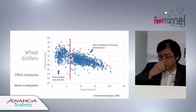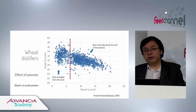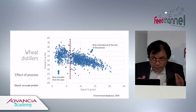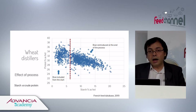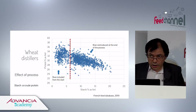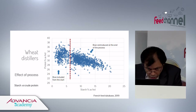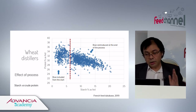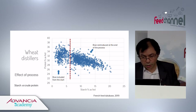For distillery by-products, there are two different processes: one where the grain is kept whole at the beginning, and one where the grain is milled and the bran is reintroduced at the end. These give different products — one much higher in starch, and one where starch is better extracted, with less than 7% starch remaining and a higher protein content.